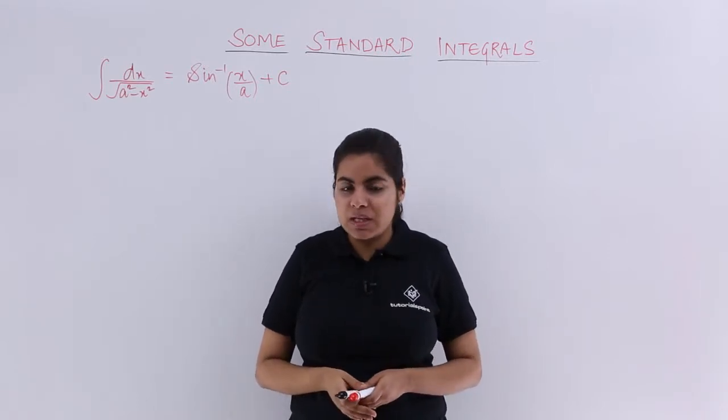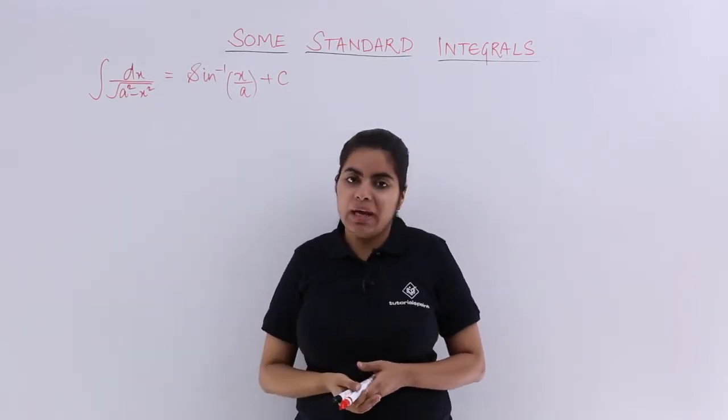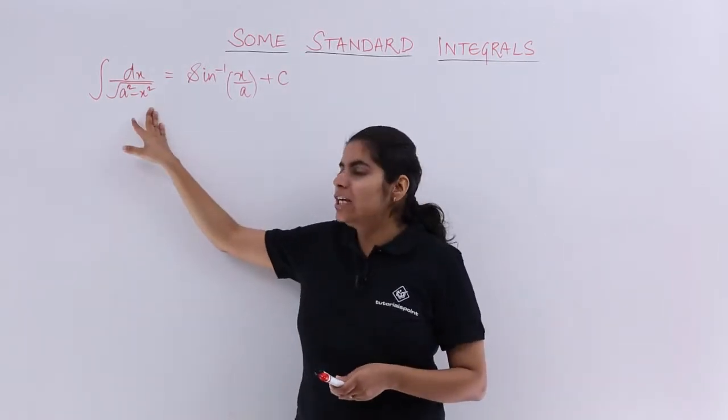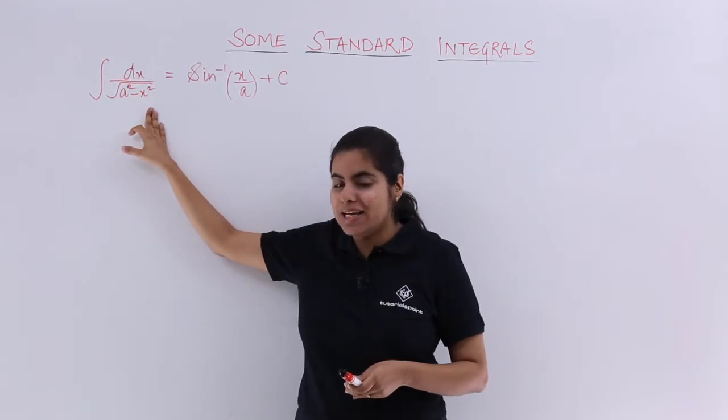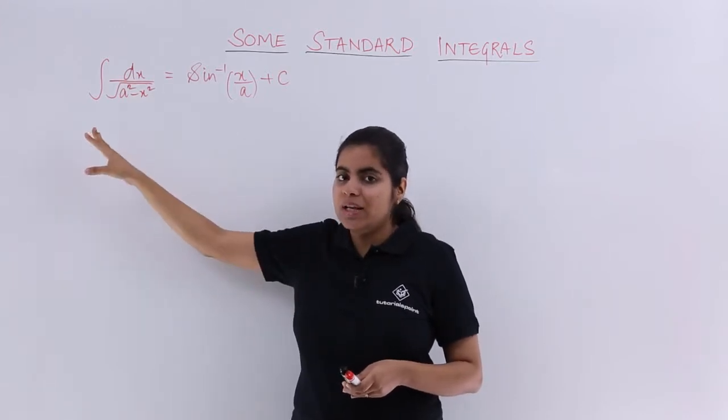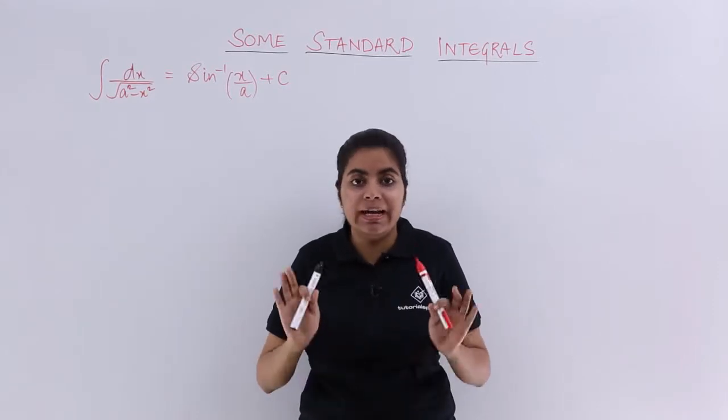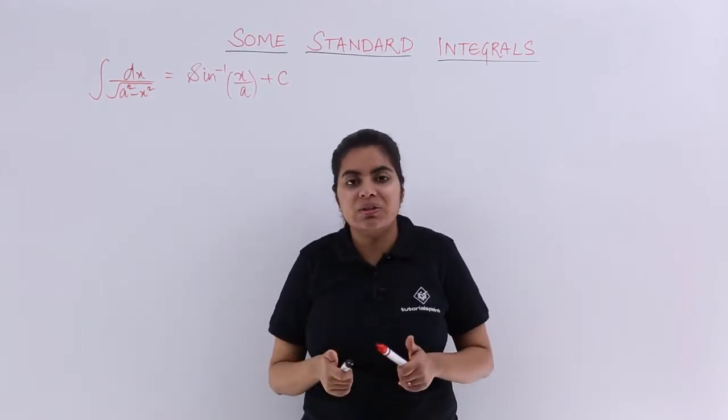But what if I substitute x equals a sine theta or a cos theta? If x equals a sine theta, its square is a square sine square theta. Coming out as common, it becomes one minus sine square theta, which is cos square theta. At least a formula exists. So that I will do.